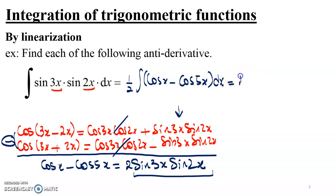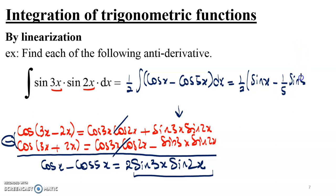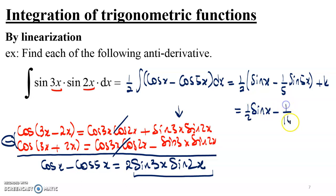Substituting into the integral gives half times the integral of (cosine x minus cosine 5x) dx. Integrating term by term: the integral of cosine x is sine x, and the integral of cosine 5x is (sine 5x)/5 by the compound formula. The final answer is half sine x minus (1/10) sine 5x plus k.